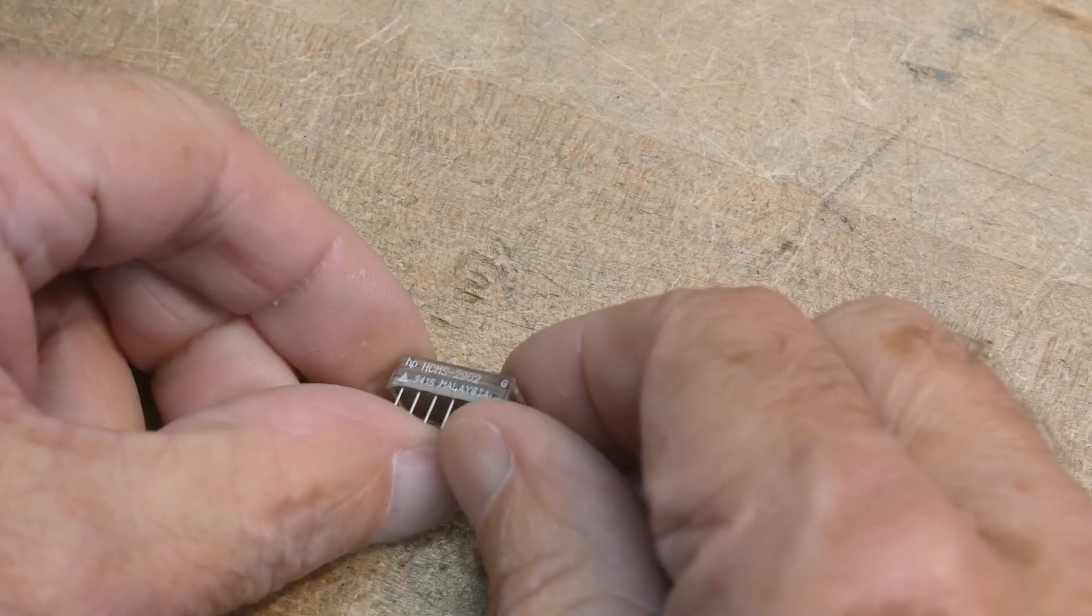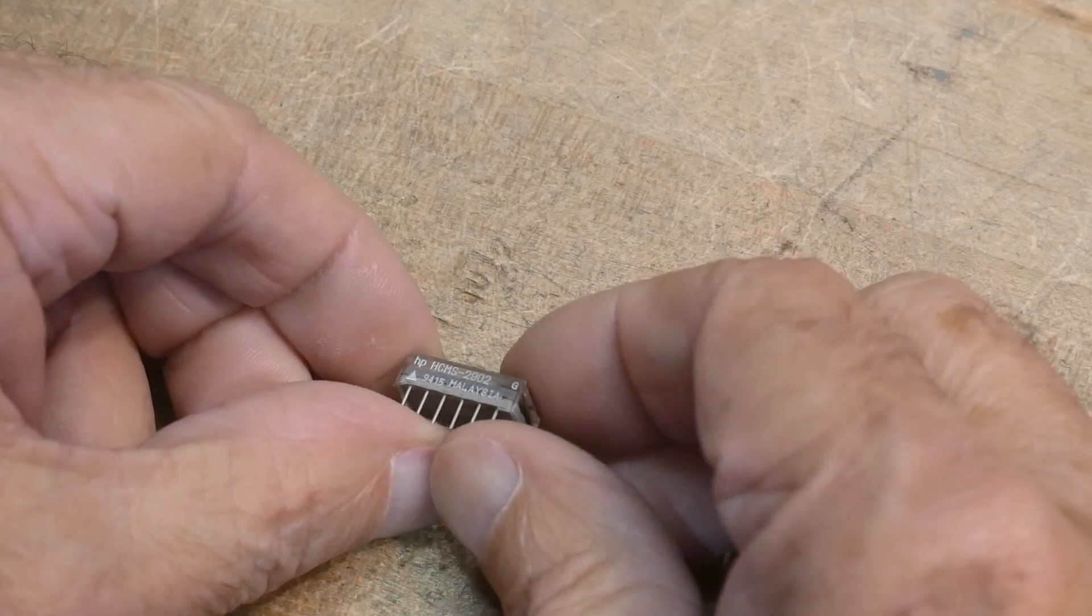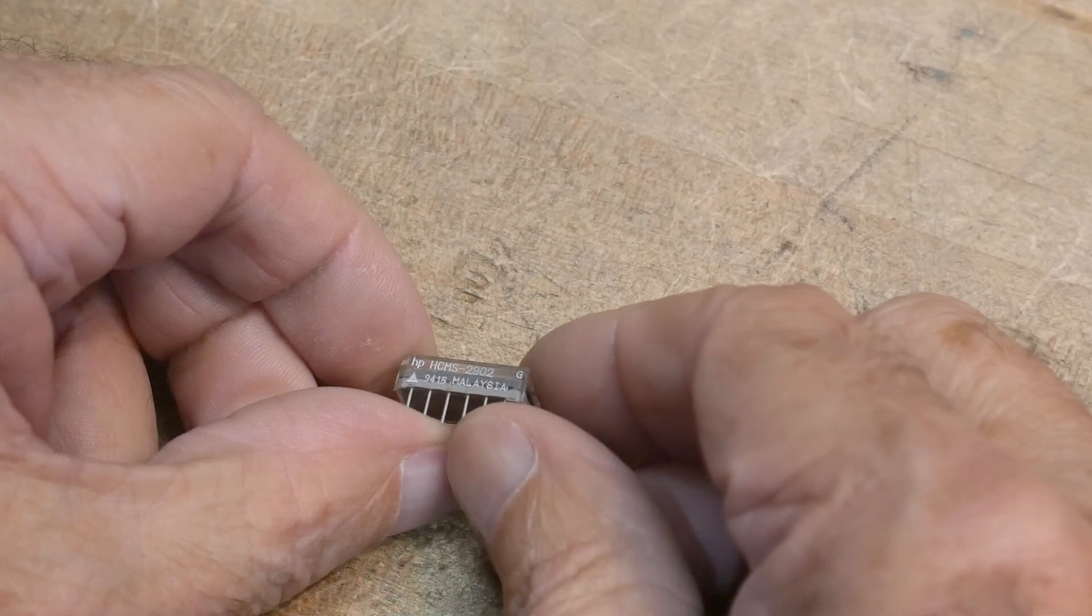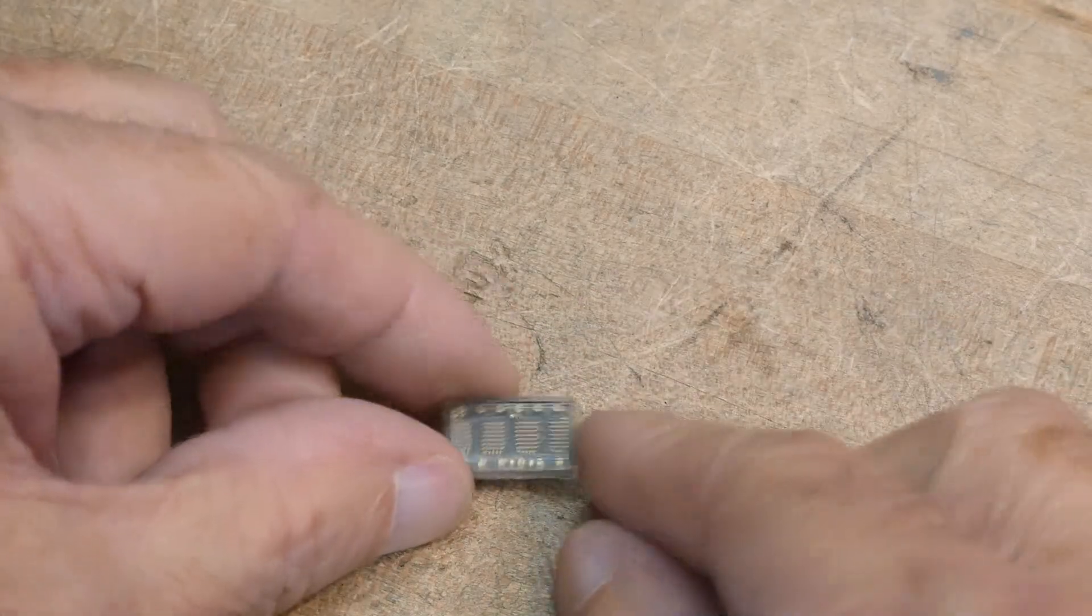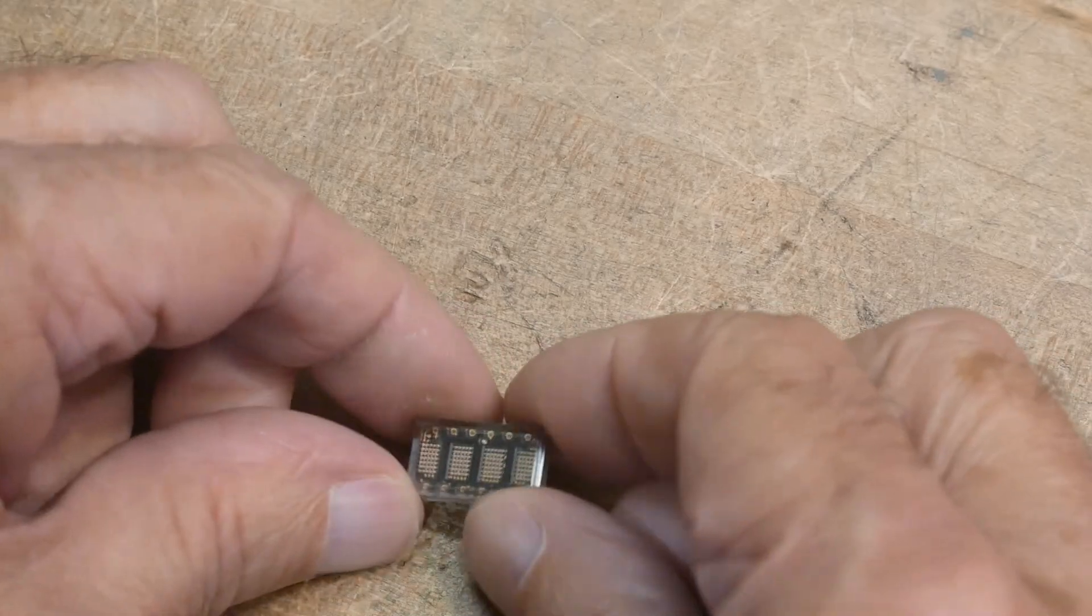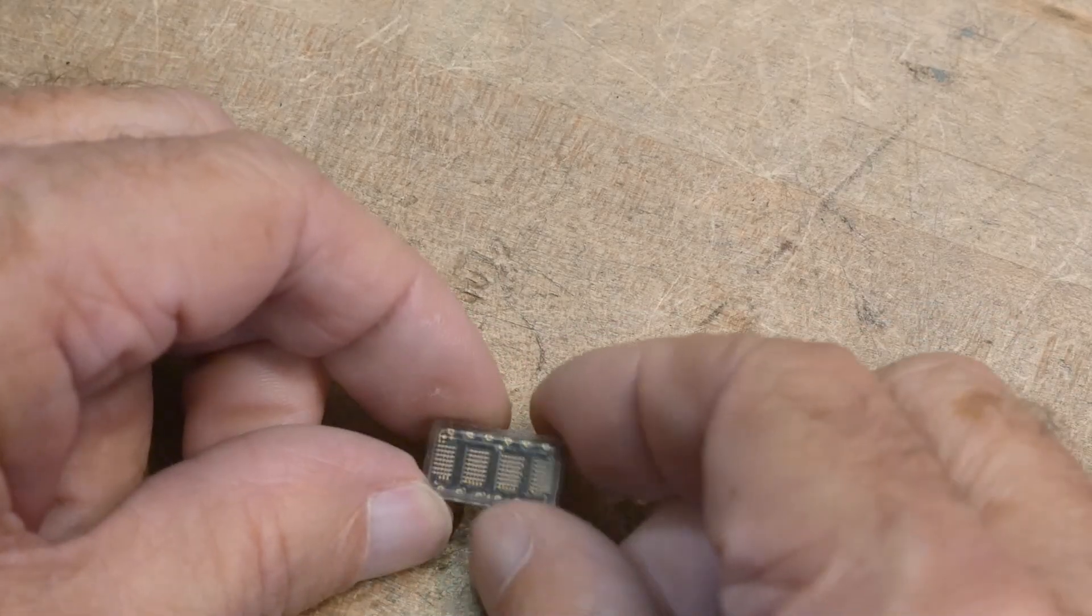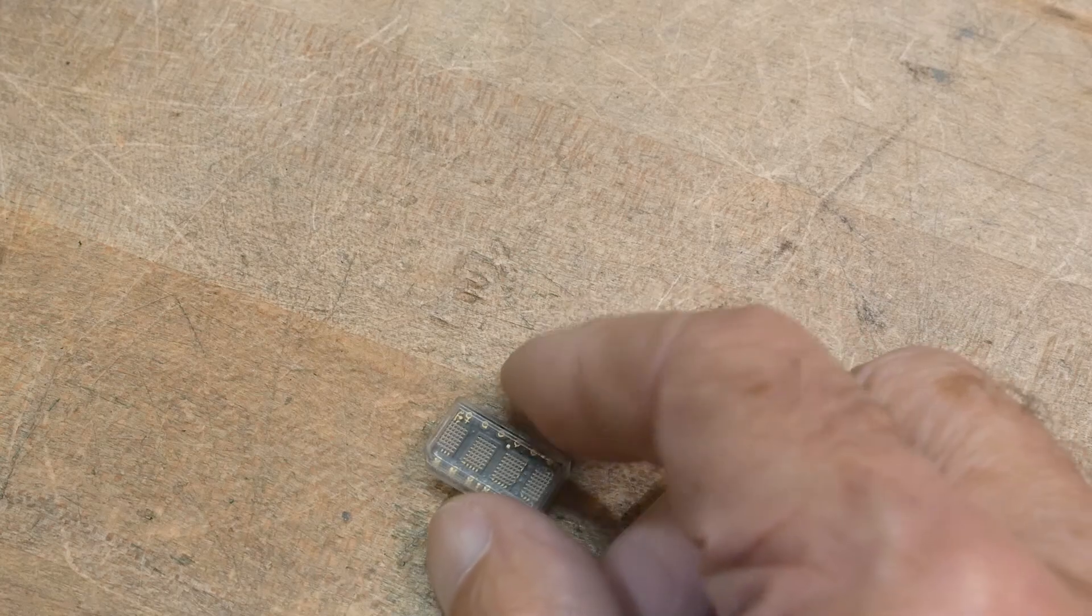It's an HCMS-2902, made in Malaysia in 1994. It's a cute little guy. It's a four-digit display with a matrix of LEDs. Let's look at the data sheet here.